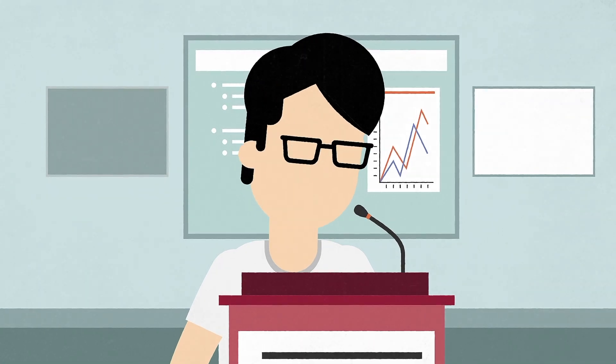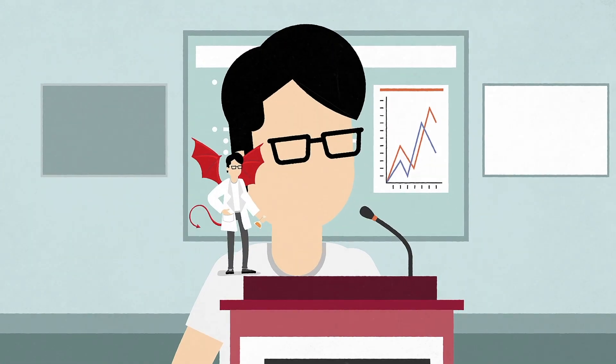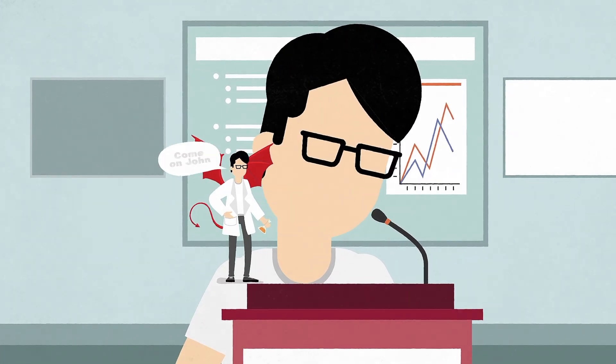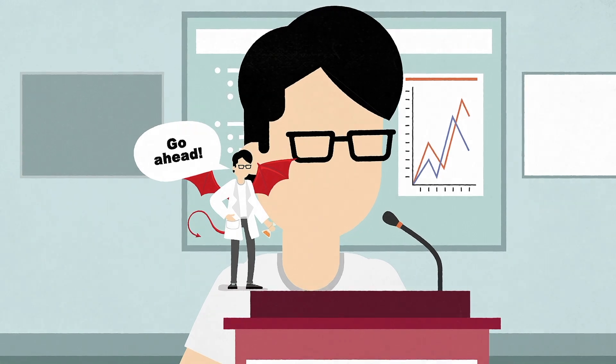Since he needs to reduce the moral distress, he tries to find a moral justification for bending the rules, rather than breaking them. Come on, John, he says to himself, go ahead.